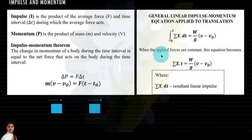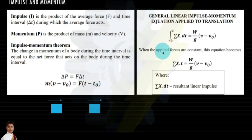Let us discuss impulse and momentum. Impulse is the product of the average force and the time interval delta t during which the average force acts, and momentum p is the product of mass and velocity v.